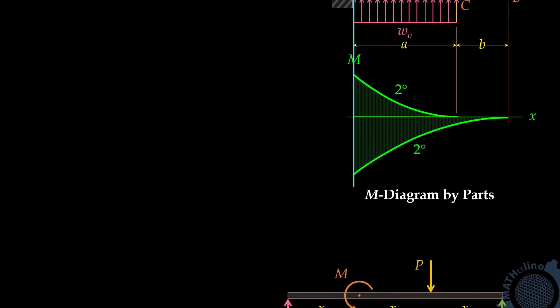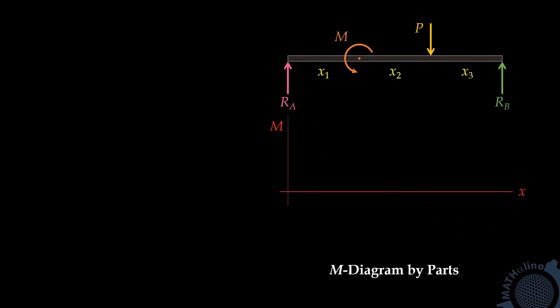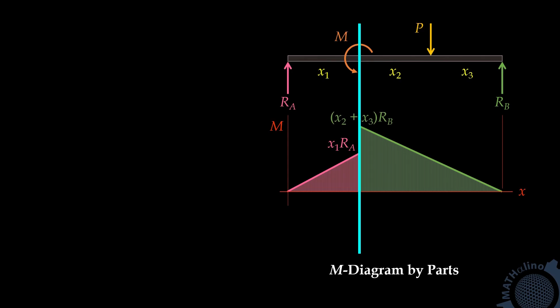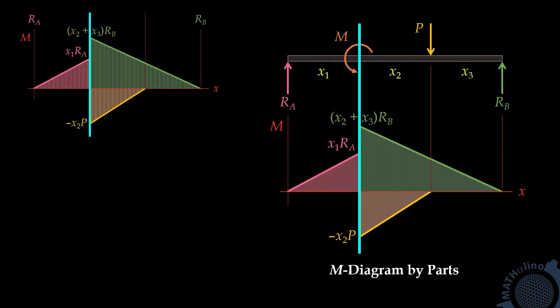Let us have another example. We have this simply supported beam with a moment load and a concentrated load. Let us say that we are going to select the moment of application of the concentrated force as our moment center to draw the moment diagram by parts. Before we can draw the moment diagram by parts, we need first to solve the reactions RA and RB. This location of moment center is actually very convenient because only three concentrated forces are involved in this diagram. We have the moment diagram due to reaction RA, the moment diagram due to reaction RB — both reactions will tend to bend the beam upward about the moment center, so both are positive. We have the moment diagram due to force P, which will cause the beam to bend downward about the moment center, and that is a negative moment.